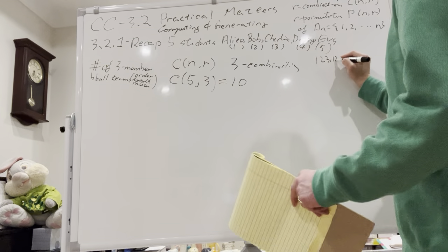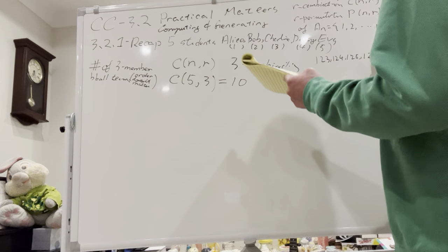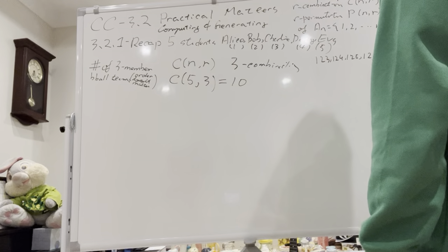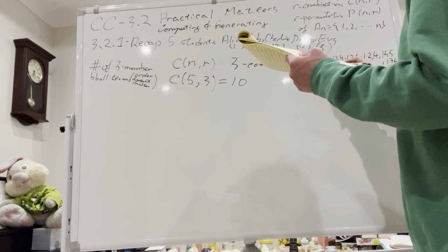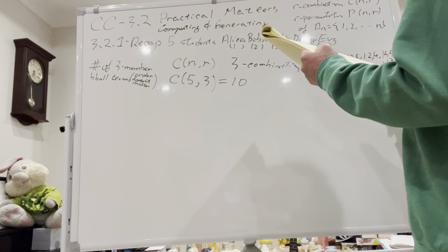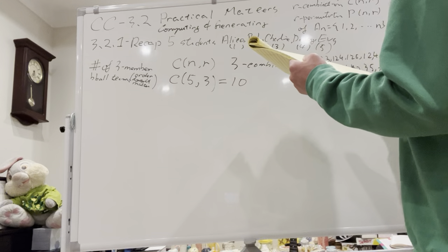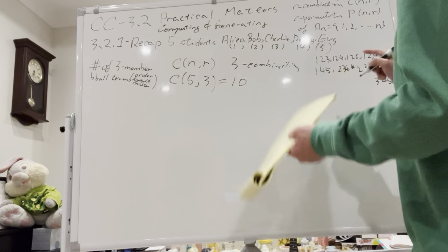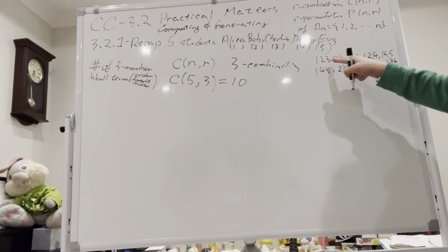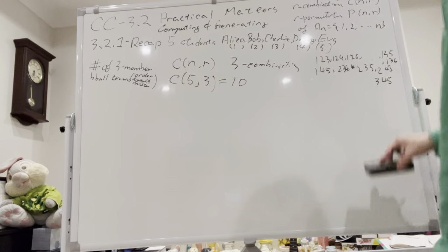Listing all 10 three-member teams: {1,2,3}, {1,2,4}, {1,2,5}, {1,3,4}, {1,3,5}, {1,4,5}, {2,3,4}, {2,3,5}, {2,4,5}, {3,4,5}. You just keep listing them — there are 10 in total.